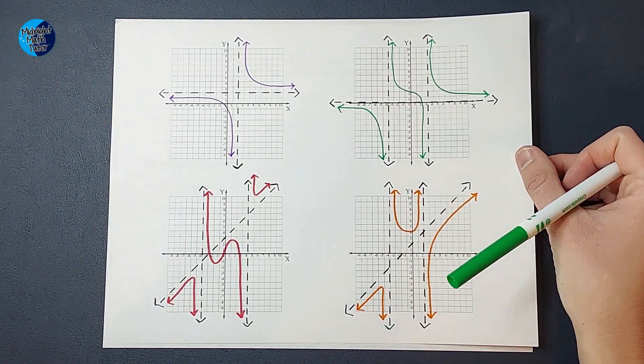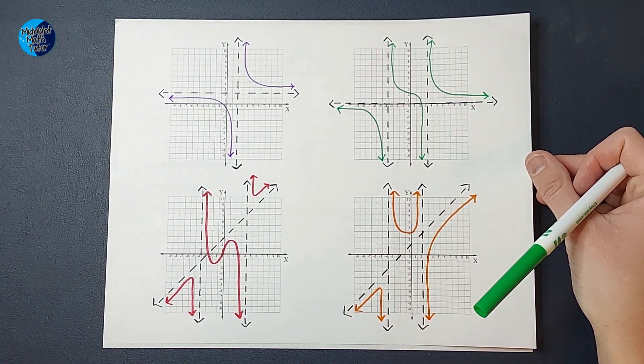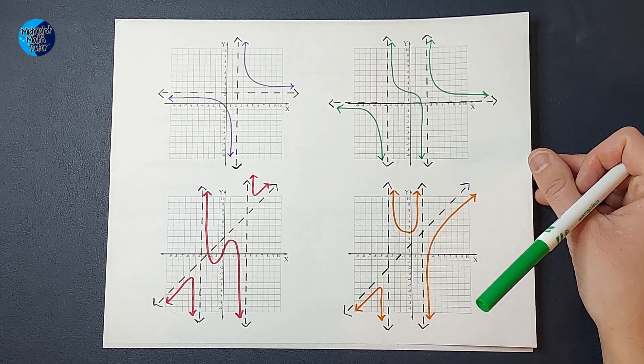The first thing I want to do is show you some examples of what these graphs can look like real fast. Here's some examples. Obviously this does not include every way the graph can look, but this just kind of gives you a good idea of what you're looking at.